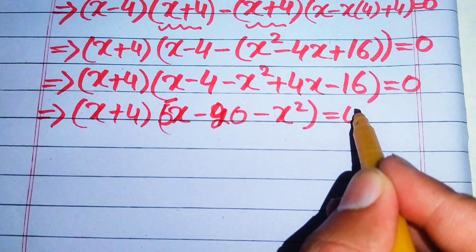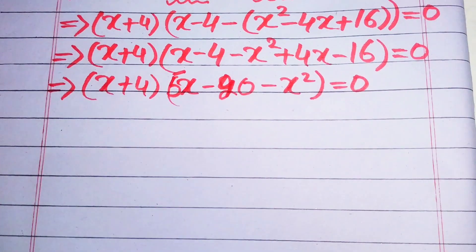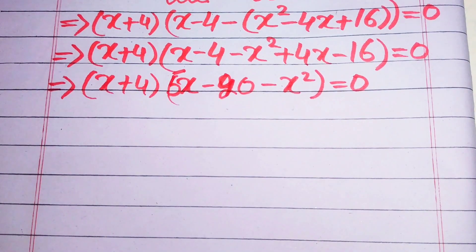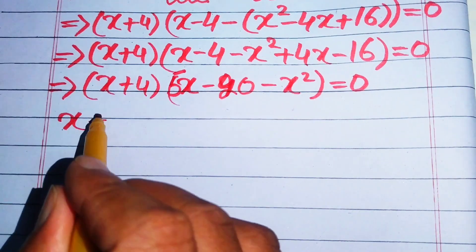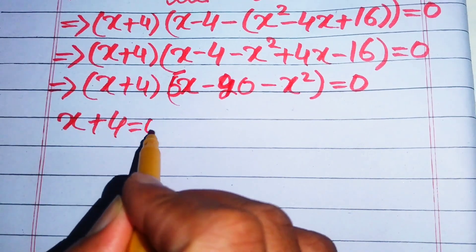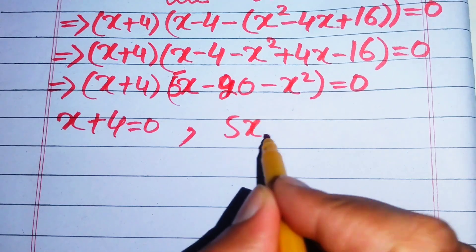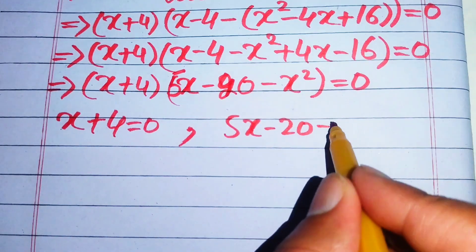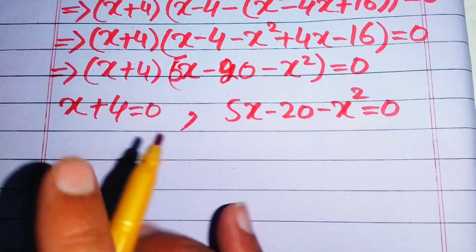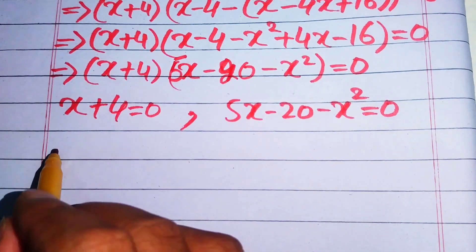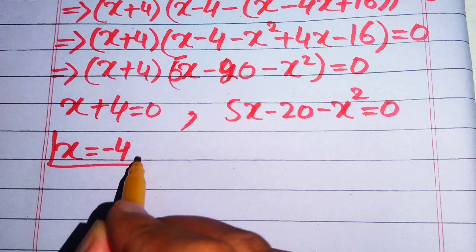We now convert this equation into two cases. The first case is x plus 4 equals zero, and the second case is 5x minus 20 minus x squared equals zero. From the first case, we get x equals minus 4, which is our first real solution.